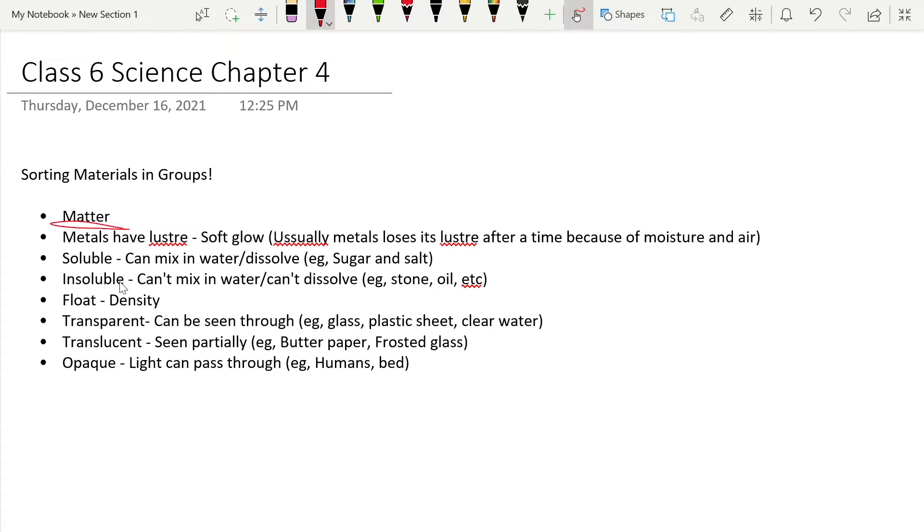Now, another thing you can group things in is if it's soluble or insoluble. Soluble means that it can mix in water, dissolve, for example sugar and salt. Insoluble means can't mix in water, can't dissolve, for example stone, oil, etc.